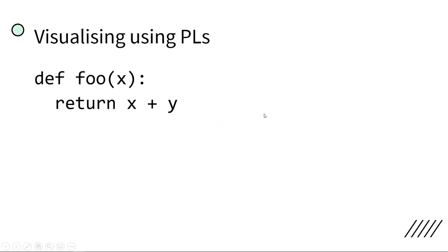So how do we relate this to our programming languages? Here's an example of a Python code. I have the function foo which takes input x, then returns x plus y. So when we ask ourselves, where are the bound and free variables? You can think of bound variables as which variables are connected to the input variable.